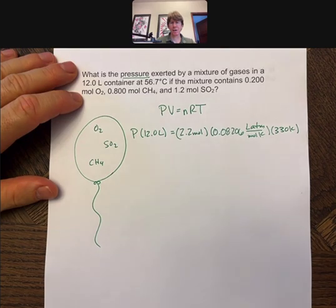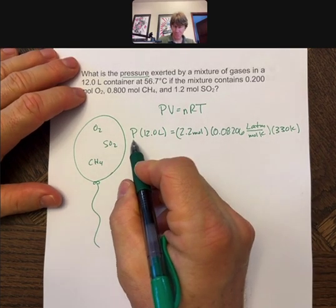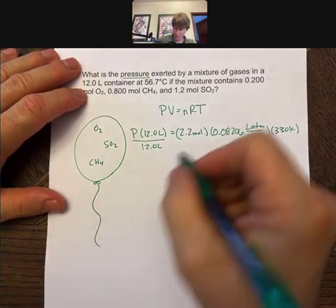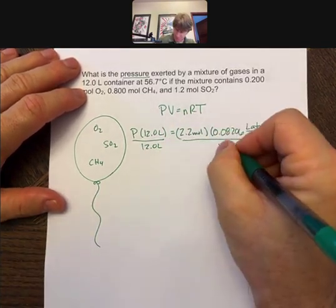So now I've got all my numbers in there. If I want to get P by itself, I'm going to divide both sides by 12.0 liters.